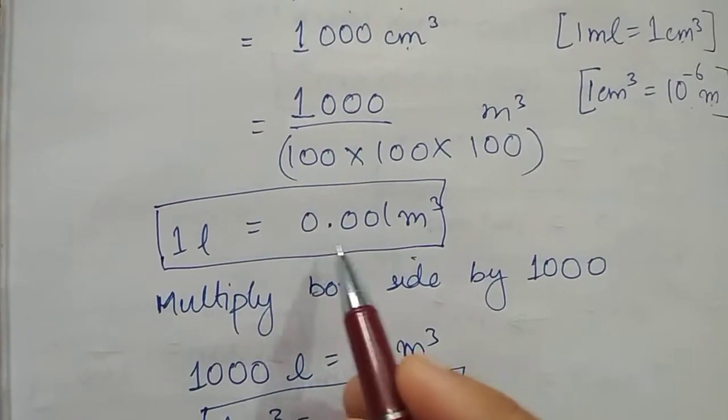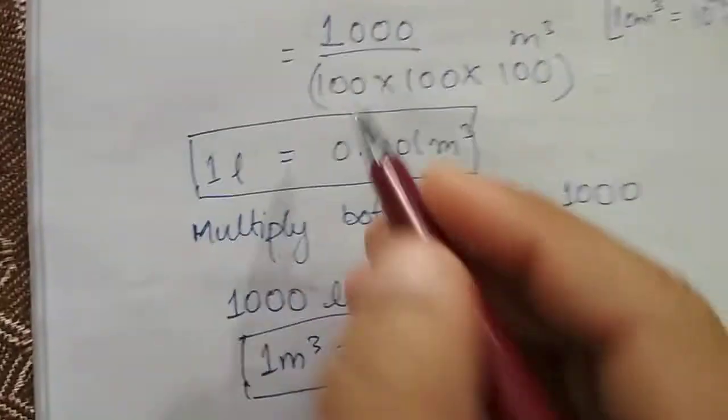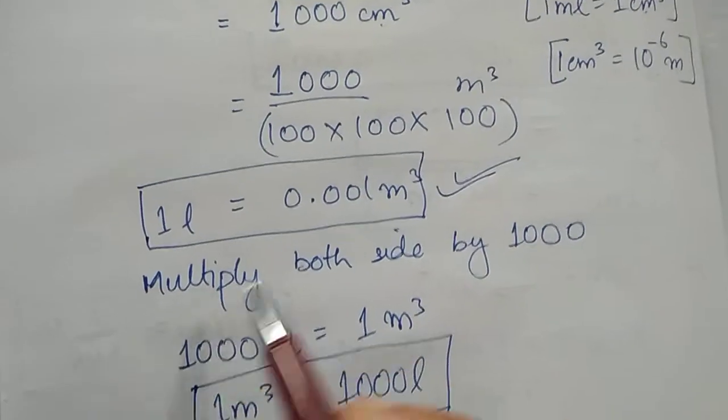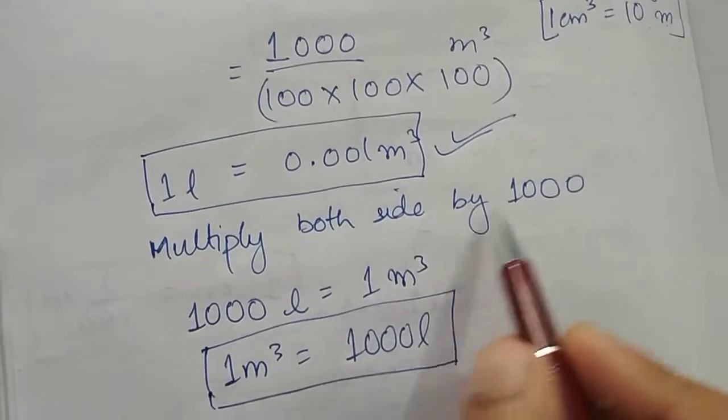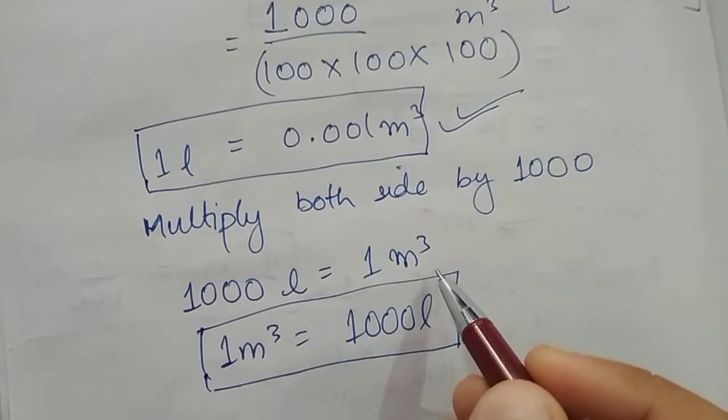Then we get 1 liter is equal to 0.001 meter cube. This is one relation and the second relation you can rewrite it like this: multiply both sides by 1000, then you get 1000 liters is equal to 1 meter cube.